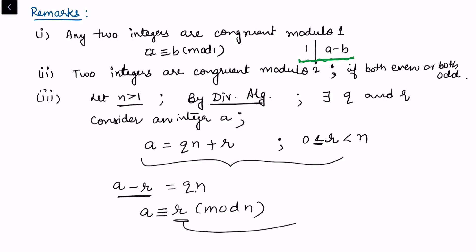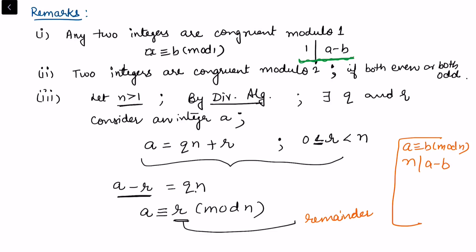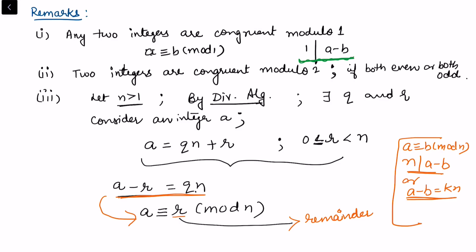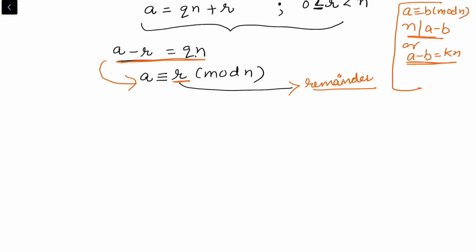Since a minus r is a multiple of n, we can write a ≡ r (mod n), where r is the remainder. Connecting back to the definition — a ≡ b (mod n) whenever n divides a minus b — we see that any integer a is always congruent to its remainder r modulo n.